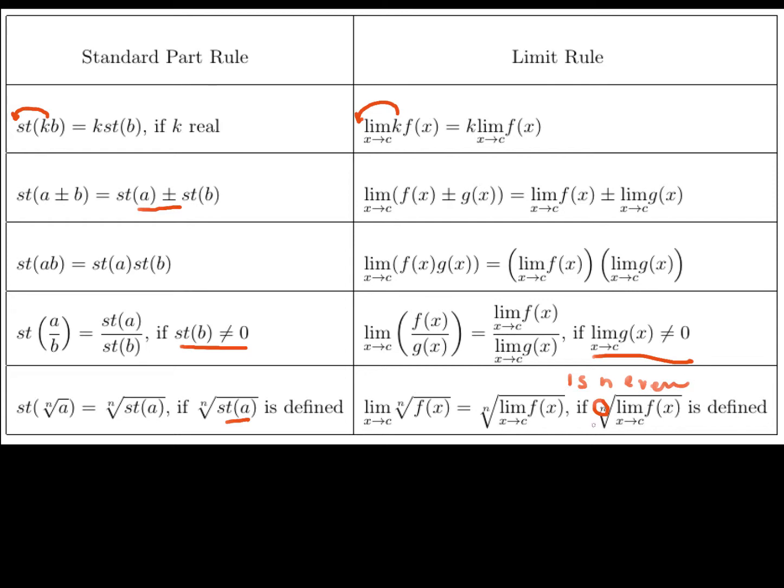And really, the issue here is: is n even? If n is odd, then cube root, fifth roots, all those, they're defined for all positive and negative values. But if this is an even number, so the square root, the fourth root, the sixth root, then it only makes sense if this n here is positive.